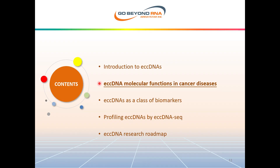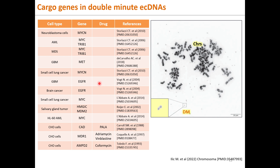What are the molecular and biological functions of ECC DNAs? Double minutes are a type of ECC DNA visible under the microscope. They carry oncogenes such as MYCN, MYC, MET, and EGFR. Cancer drug treatments can develop drug resistance and produce double minutes. For example, CHO cells treated with anti-cancer drugs such as PALA, L-aspartate, adriamycin, vinblastine, and coformycin can develop double minutes carrying CAD, NDR1, and MDPD2 drug resistance genes.